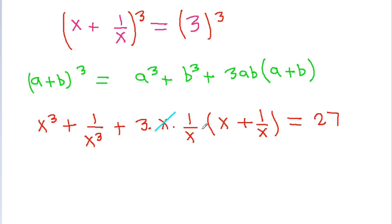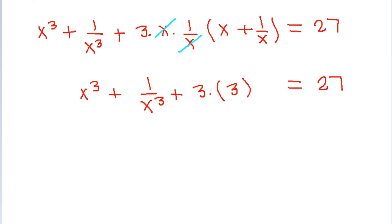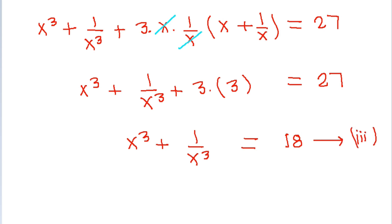The x and 1 by x cancel, giving us x cubed plus 1 by x cubed is equal to 27 minus 9, which is 18. Let's call this Equation 3.